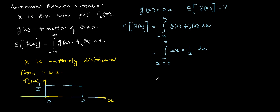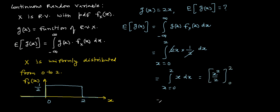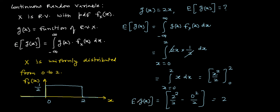Evaluating the integral: E[g(x)] = integral from 0 to 2 of 2x·(1/2) dx = integral from 0 to 2 of x dx = [x²/2] from 0 to 2 = (2²/2) − (0²/2) = 2 − 0 = 2. So the expected value of the function of the continuous random variable is 2. That's how we use the formula for both discrete and continuous random variables to find the expected value of a function of a random variable.